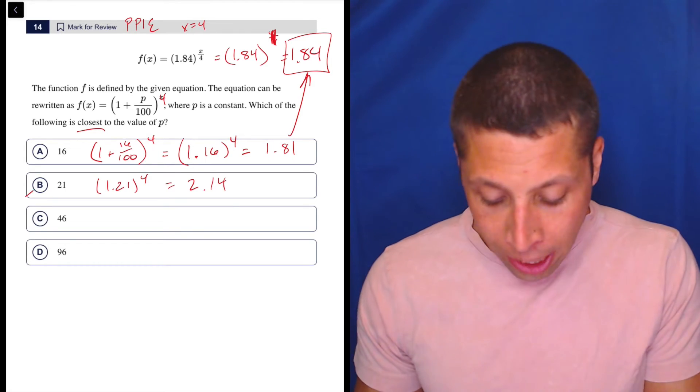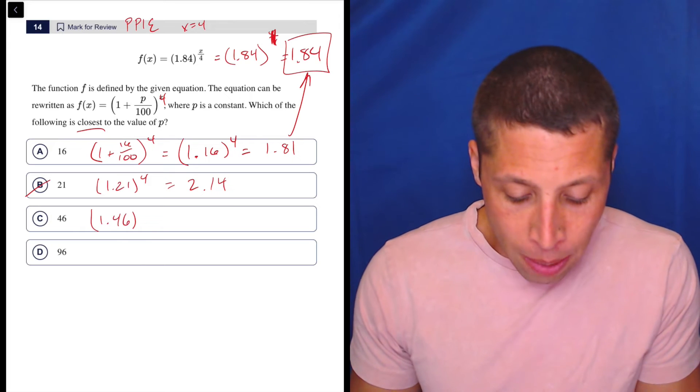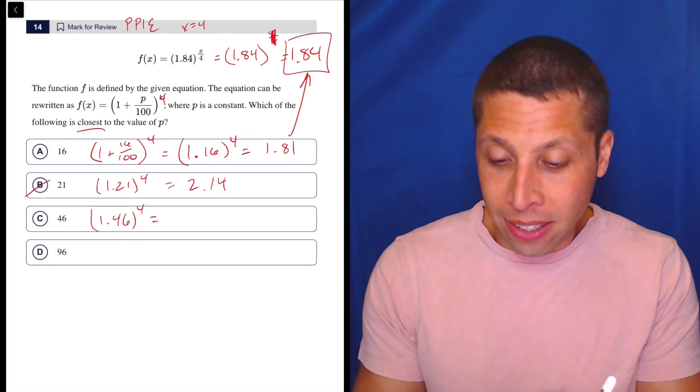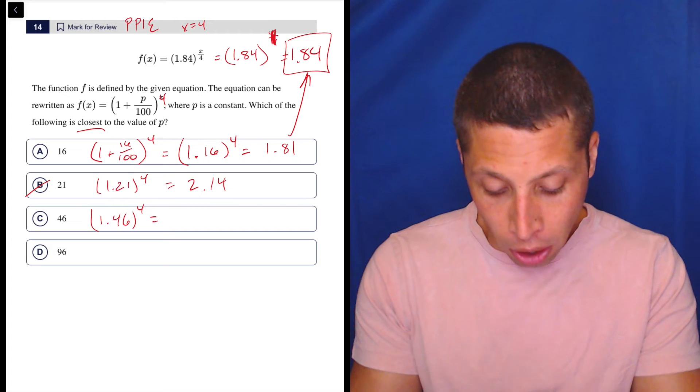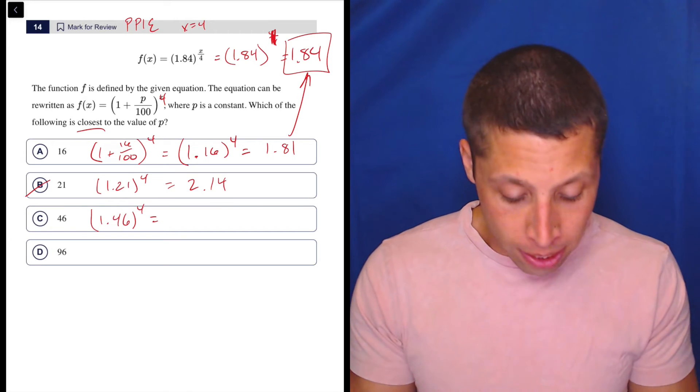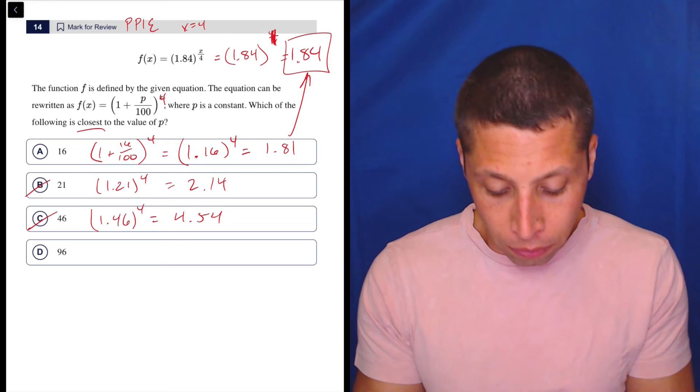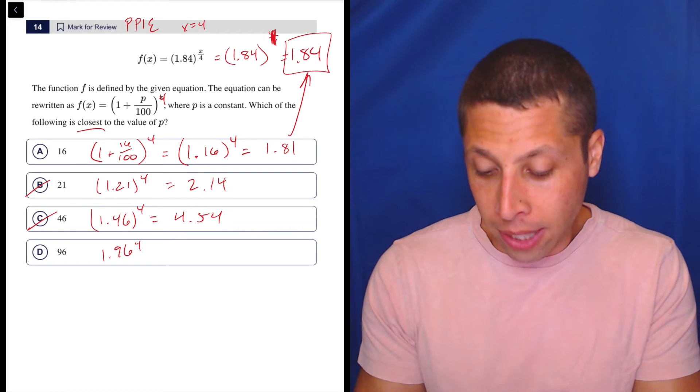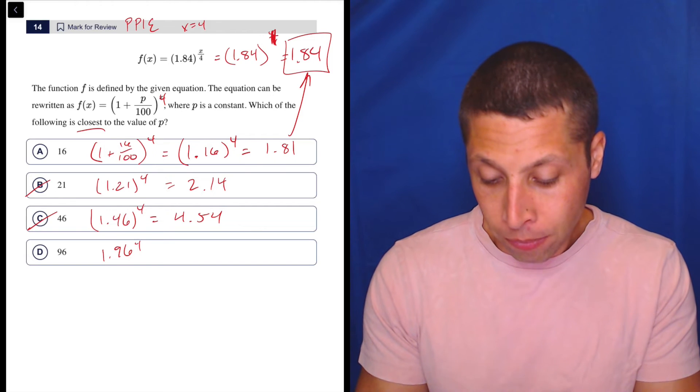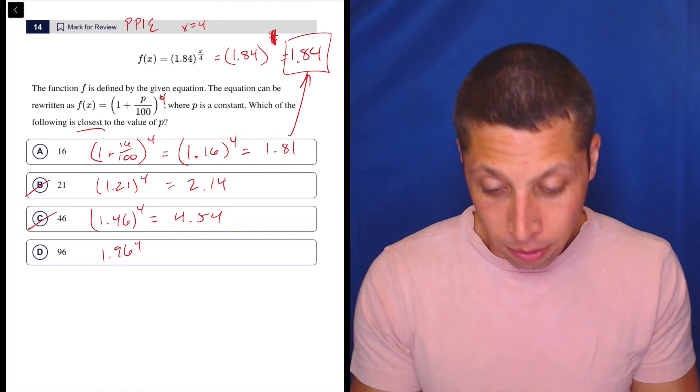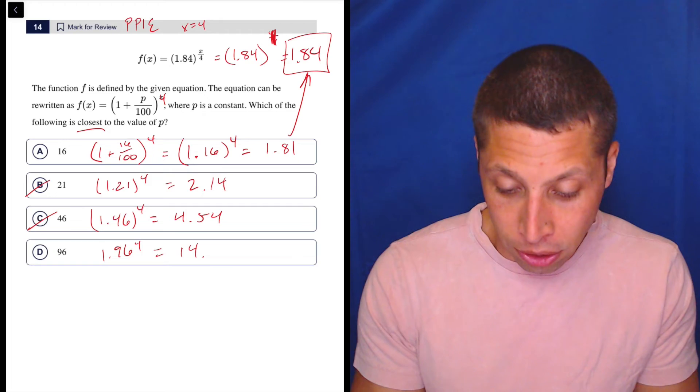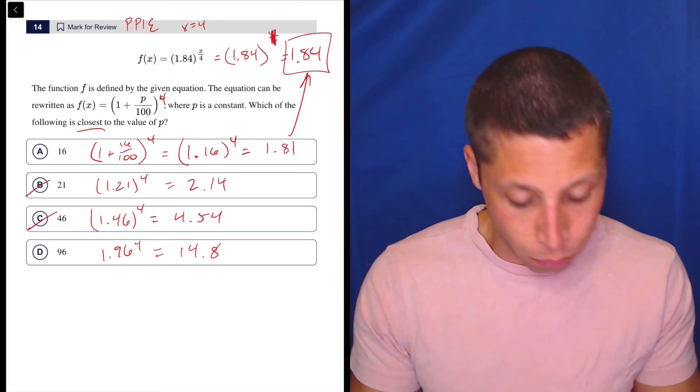And this is going to start a trend. As we keep going, we're going to get bigger and bigger numbers because this is how exponents work. All these numbers are greater than one. So as we raise them to exponents, we're going to get bigger and bigger numbers. So we're just moving further away from our answer. So 1.96 to the fourth, just to confirm, is very big compared to the answer, 14.8. So that's it.